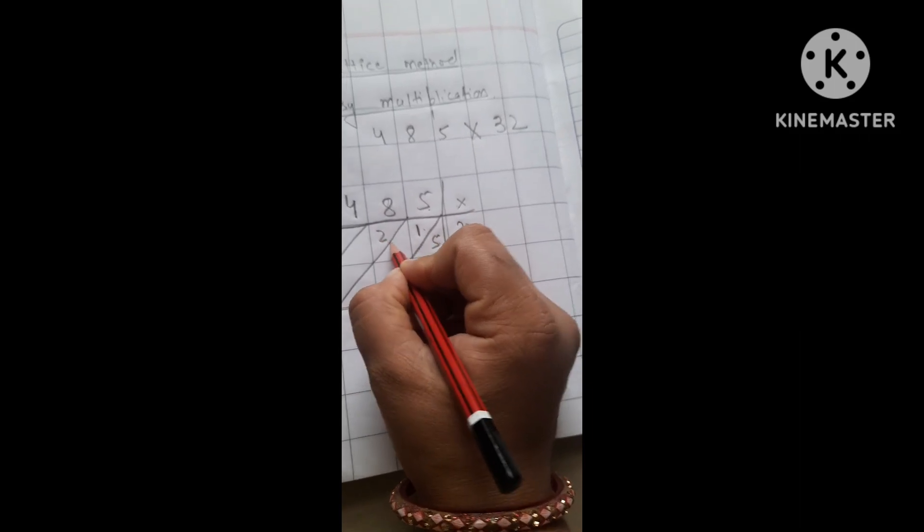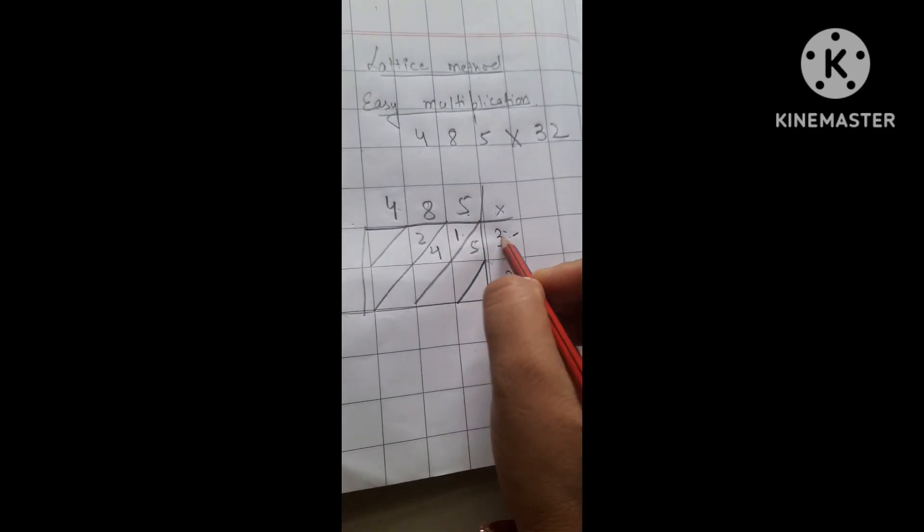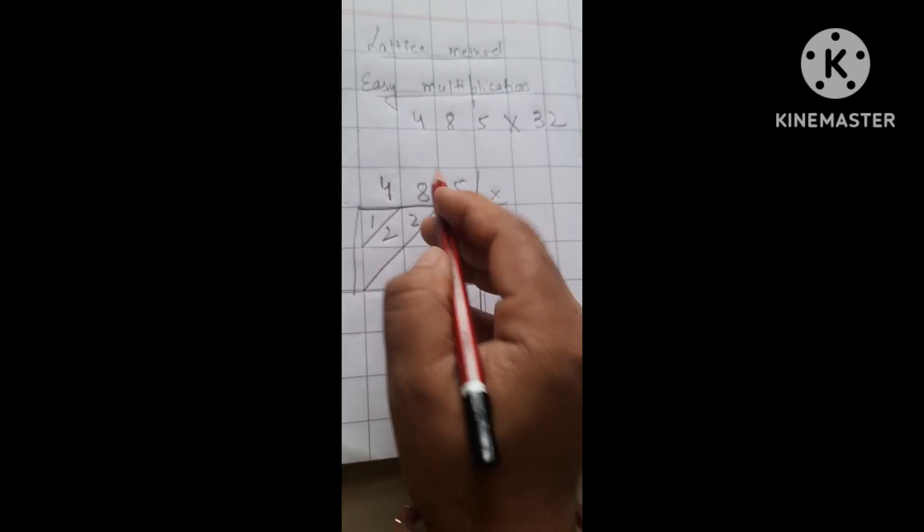Then, 8 into 3 is 24, write 4 right there. Then, we have 4 into 3 is 12. So, this is our first complete part.